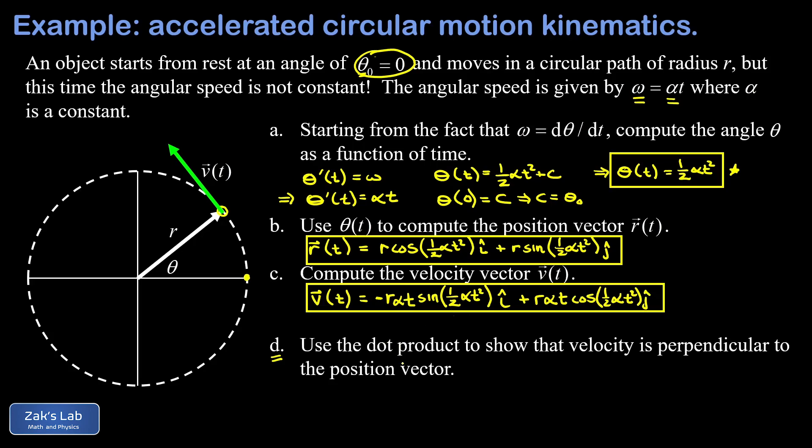In part d, we're going to use the dot product to verify that the position and velocity vectors actually are perpendicular to each other. This is related to a previous example where we showed the same thing for the acceleration and velocity vectors in uniform circular motion. The idea is that you can always use the dot product to show whether or not two vectors are perpendicular because perpendicular vectors have a zero dot product.